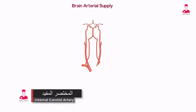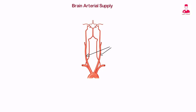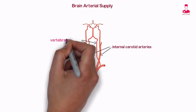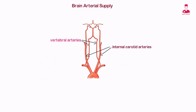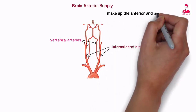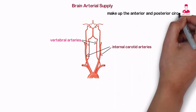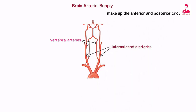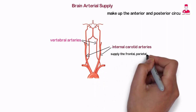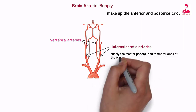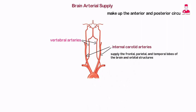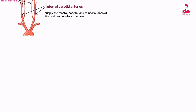The brain receives arterial blood from two main pairs of vessels and their branches: the internal carotid arteries and the vertebral arteries, which make up the anterior and posterior circulation. The internal carotid arteries supply the frontal, parietal, and temporal lobes of the brain and orbital structures.